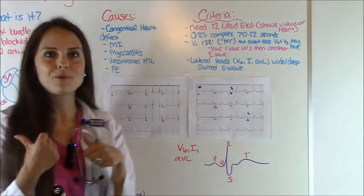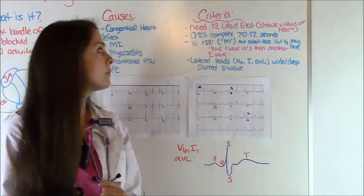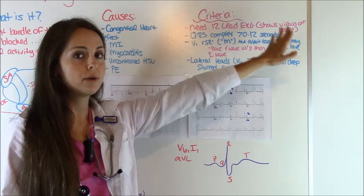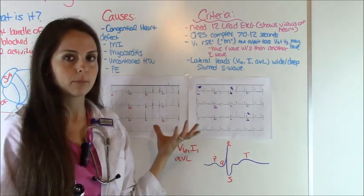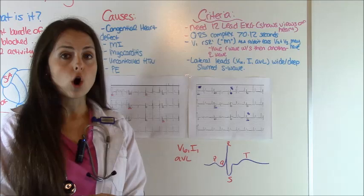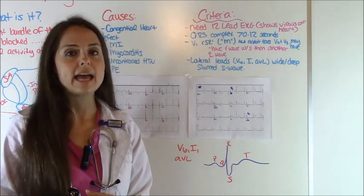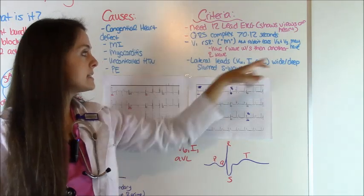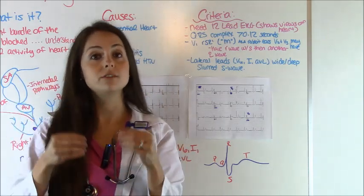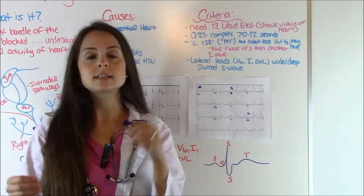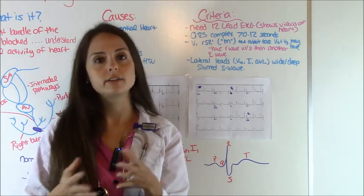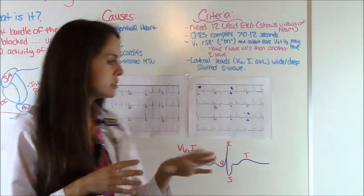Next, you'll want to look at V1 and look for that RSR prime phenomenon — the M shape or rabbit ears. That may also be present in V2 and V3. And in the lateral leads — V6, lead one, and lead AVL — you're going to see what's happening to the S wave: it's going to look deep, wide, and a little slurred. So not only is V1 going to have that M shape, but V6, lead one, and AVL are going to have an S wave that looks slurred, wide, and deep. Looking at the view from V6, lead one, and AVL: you have your P wave, your QRS complex — notice it's wide, wider than 0.12 seconds — and notice that the S wave is really wide and a little slurred, which qualifies as the criteria.